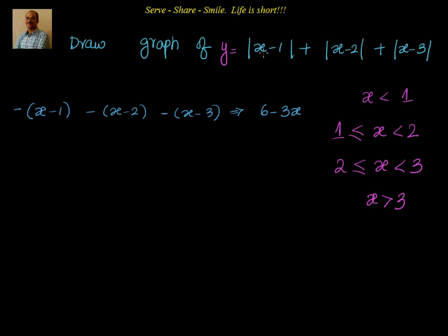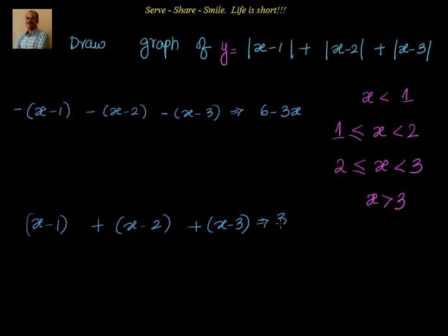When x is greater than 3, all parts give positive values, so we can write directly: x minus 1 plus x minus 2 plus x minus 3, which equals 3x minus 6. So when x is greater than 3 the function is 3x minus 6, and when x is less than 1 the function is 6 minus 3x.